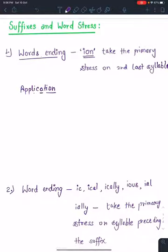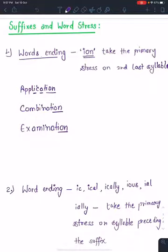Words ending in I-O-N take the primary stress on the second last syllable. For example: combination. Combination has the stress on the second syllable. Another example is examination.